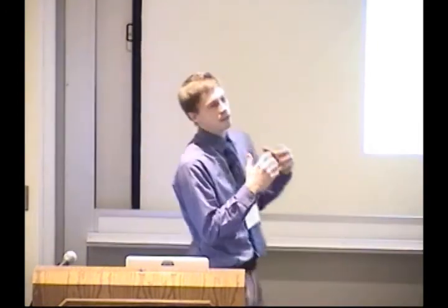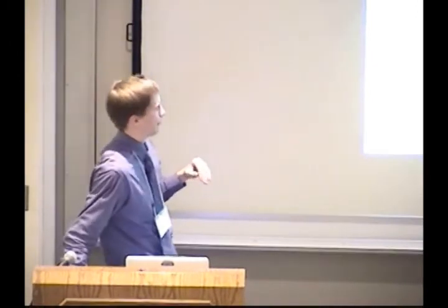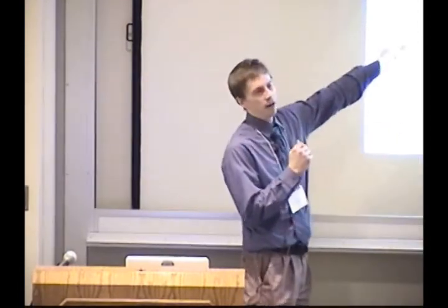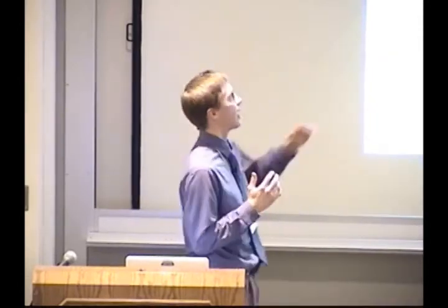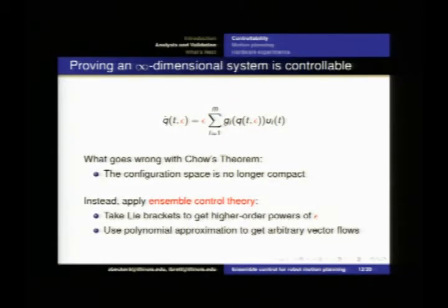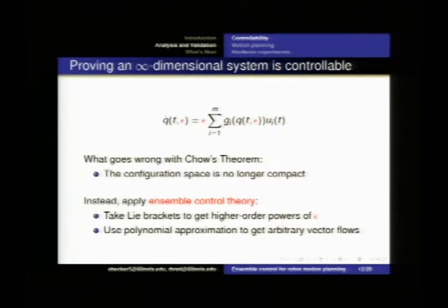Now we want to do the same thing with our infinite dimensional system — that continuum. But we have a problem because the state space of our continuum is infinite dimensional. There's no way that we can create an infinite number of controllable vector fields. However, following the same motivations in ensemble control theory, if we can take Lie brackets of the controllable vector fields that we can generate, and if we can generate arbitrarily high values of this epsilon parameter — that uncertainty parameter — then we can approximate any given vector flow field.